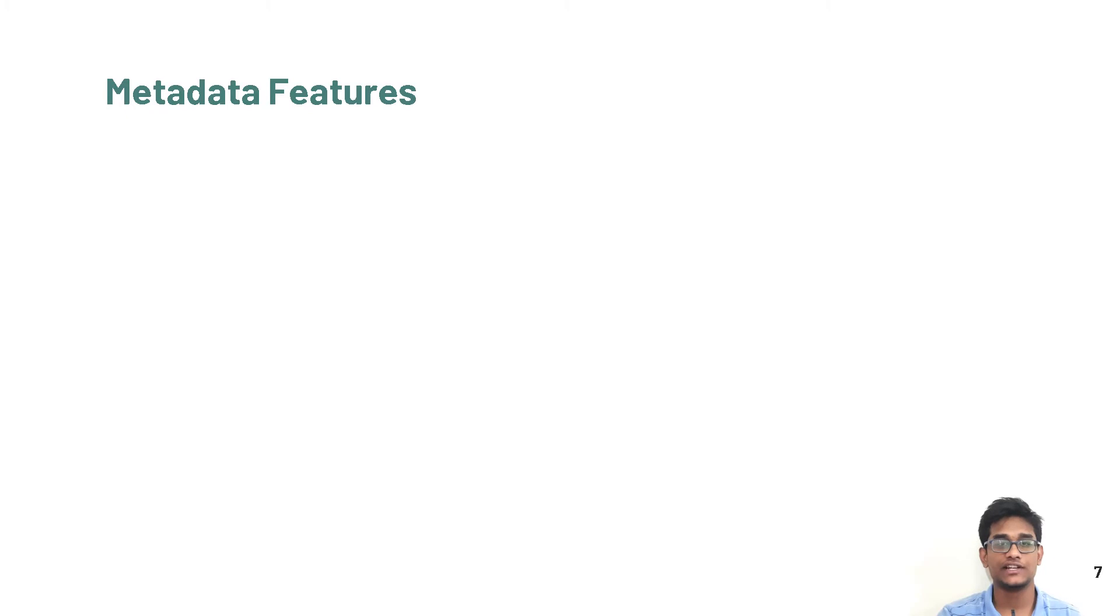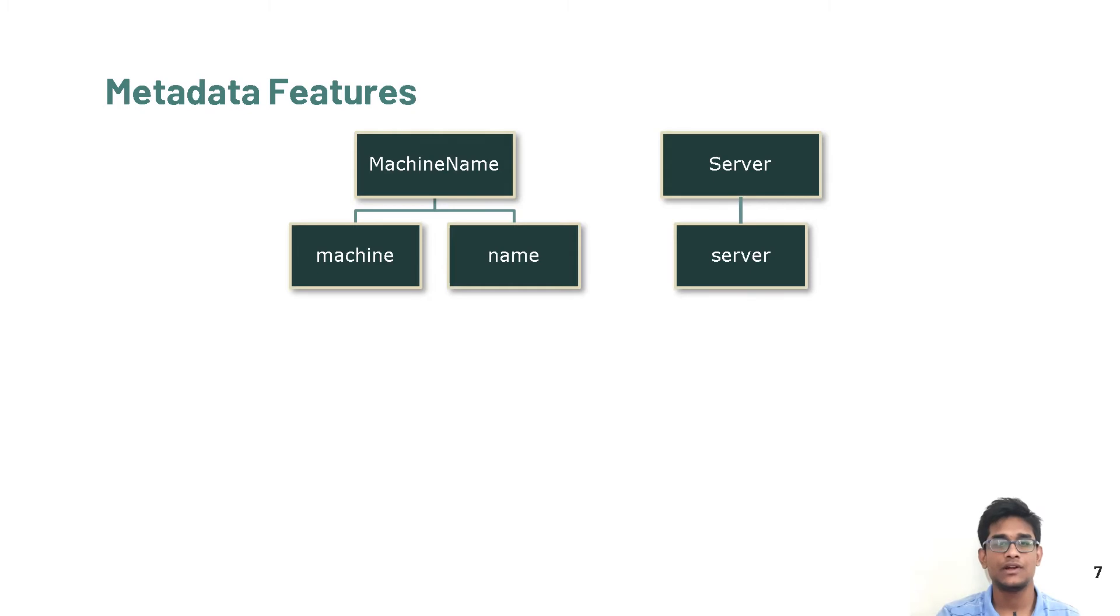We use two classes of features, metadata and content based features. Metadata based features are based on column names. First, we start by tokenizing these column names. A column called machine name is broken down into machine and name, and the column server has a single token server.